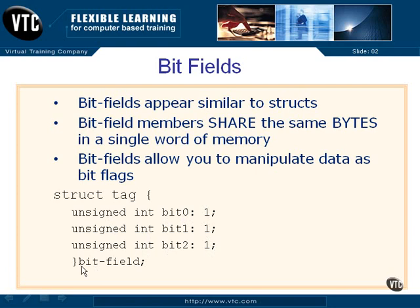The variable name will be called bitfield, and it works just like a structure. You'll have bitfield.bit_zero, bitfield.bit_one, bitfield.bit_two, and you can either set it to one or zero — turn the bit on or off by setting it true or false, one or zero. If you create a pointer to this thing, that's fine as well, and then you use the arrow operator: pointer->bit_zero, bit_one, bit_two.